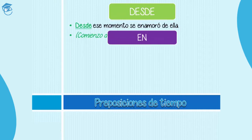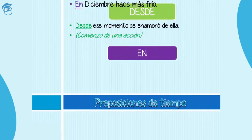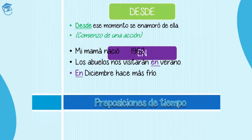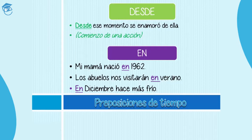También puedes usar esta preposición de tiempo en. For example, Mi mamá nació en 1962. Los abuelos nos visitarán en verano. En diciembre hace más frío. In the first one, en is used with the year — my mom was born in 1962. Our grandparents will visit us in the summer, during the summer — en verano. On December it's colder — en diciembre hace más frío. Así que puedes usar en con los años — with years — estaciones — seasons — and months of the year, los meses del año, para indicar tiempo.